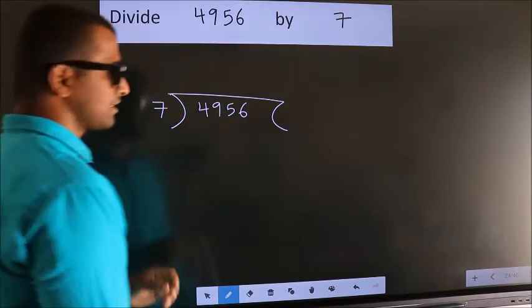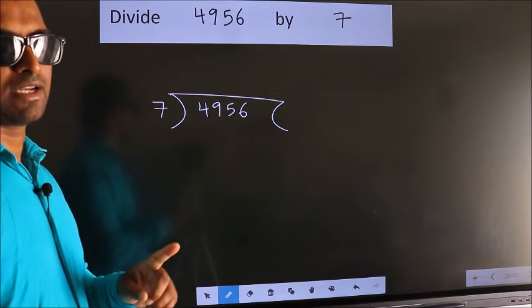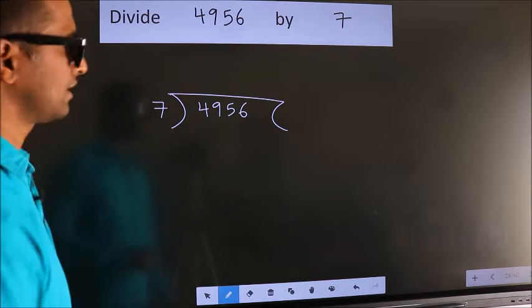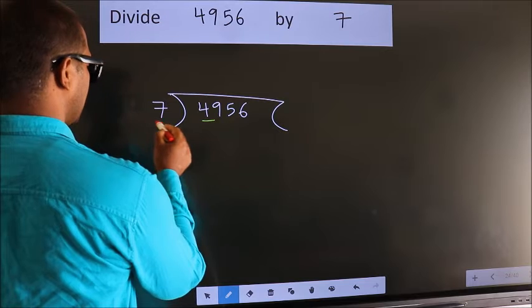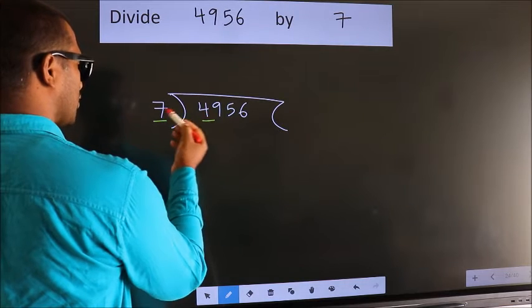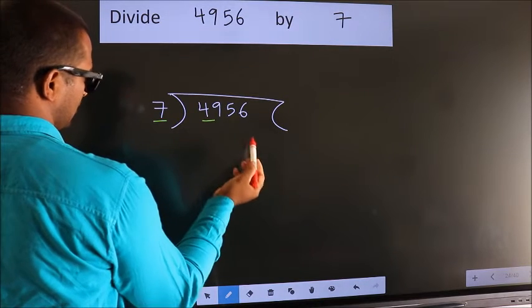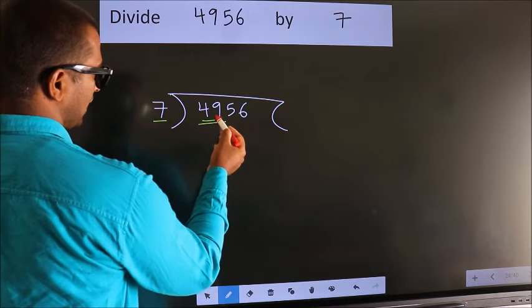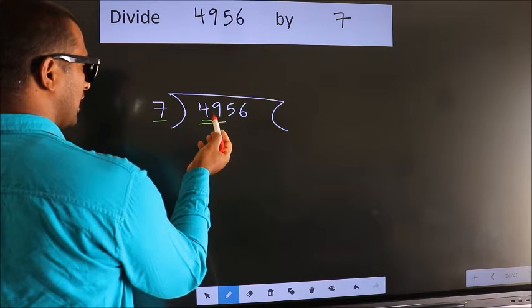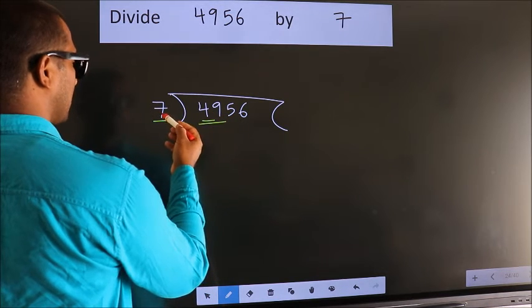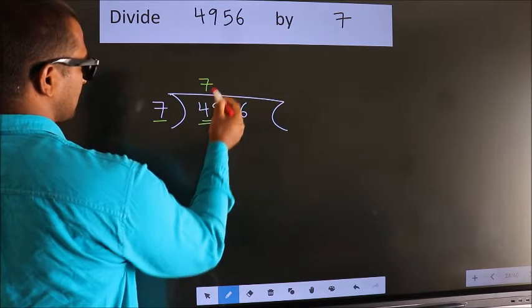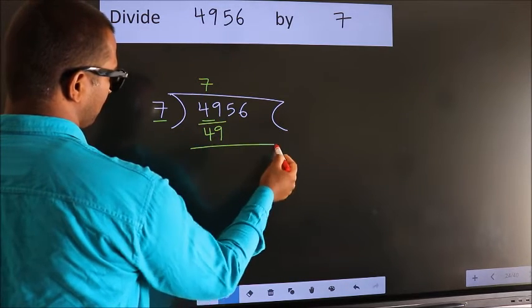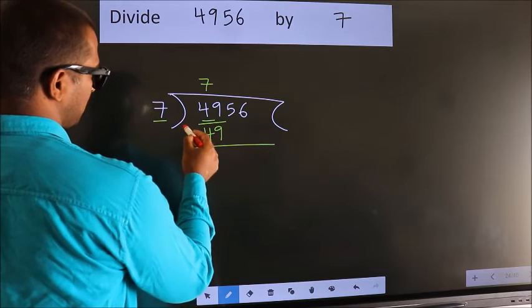This is your step 1. Next, here we have 4, here 7. 4 is smaller than 7, so we should take two numbers, 49. When do we get 49? In the 7 table. 7 times 7 is 49. Now we should subtract. We get 0.